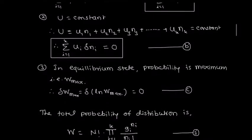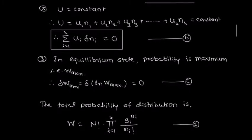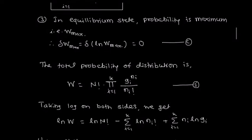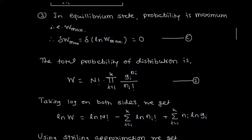Now we find the total probability of distribution. W equals the total probability of distribution, which is the product of thermodynamic probability and a priori probability. That relation is: W equals N factorial times the product i equals 1 to k of gi raised to ni, divided by ni factorial. Now we take log on both sides and simplify: log W equals log N! minus summation i equals 1 to k of log(ni!) plus summation i equals 1 to k of ni·log(gi), since the product term converts into summation when we take log.